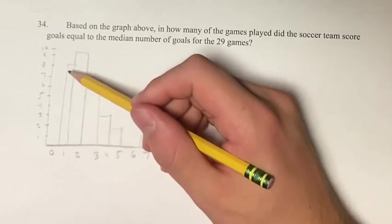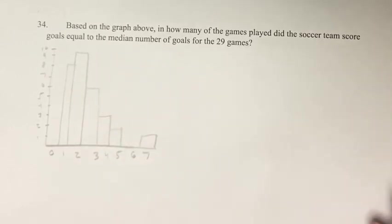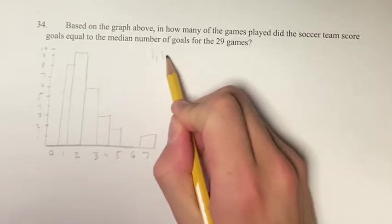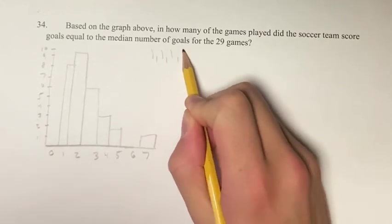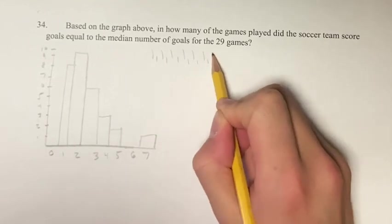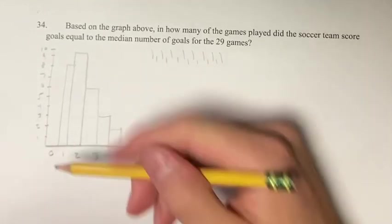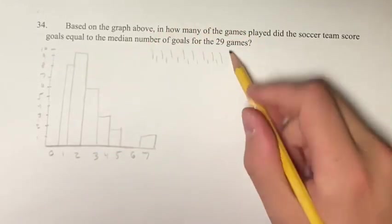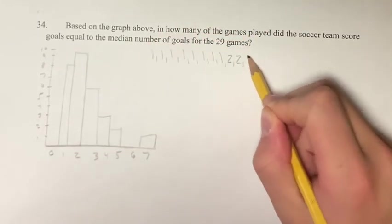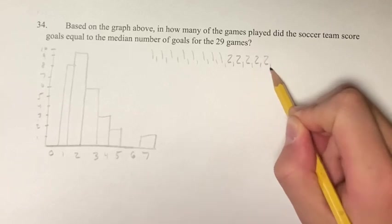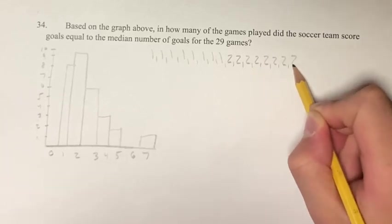So we start out with one. We have eight games in which they scored one goal, so that's eight values of one. For two goals, there's nine games.